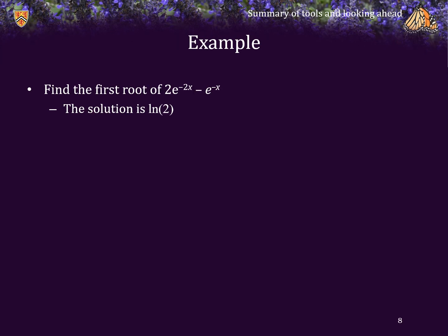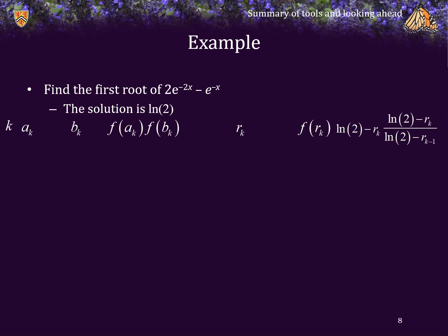We haven't actually done the error analysis because it's rather complex. Let's first try to investigate what the rate of reduction of the error is based on an example. We'll use the same example as before, where the solution is ln of 2. We're going to have various k values from 0 to 10, with the endpoints a sub k and b sub k, the function evaluated at these points, the root of the interpolating linear polynomial, the value of the function at that point, the error, and once we've gotten to the second iteration, the error over the previous error.